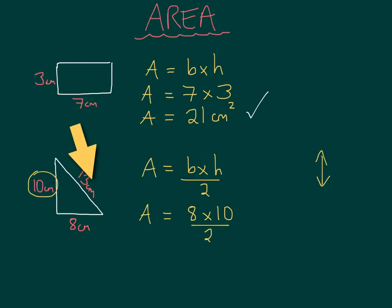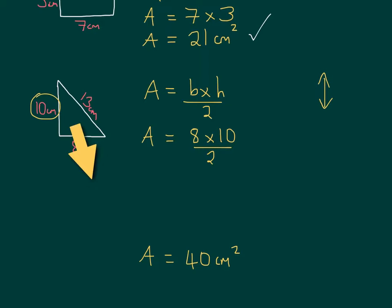And if you're working out the perimeter, you just add up all the sides. So going back to our area, 8 times 10 divided by 2. Well, you can do 8 times 10 first, 80, and then divide by 2. So that's 40. Again, the units are centimeters squared.